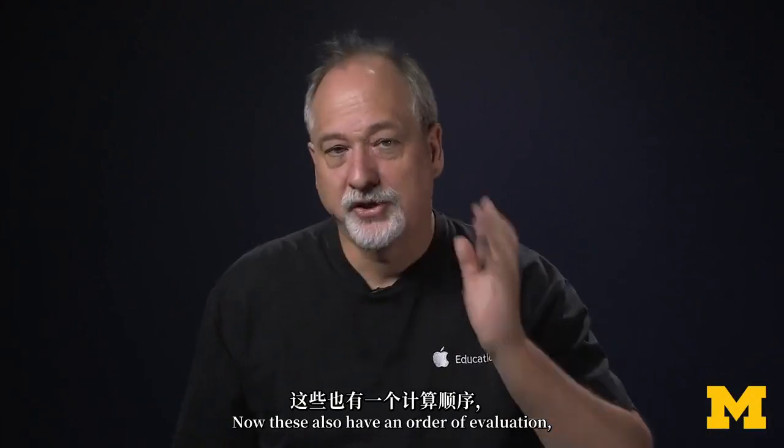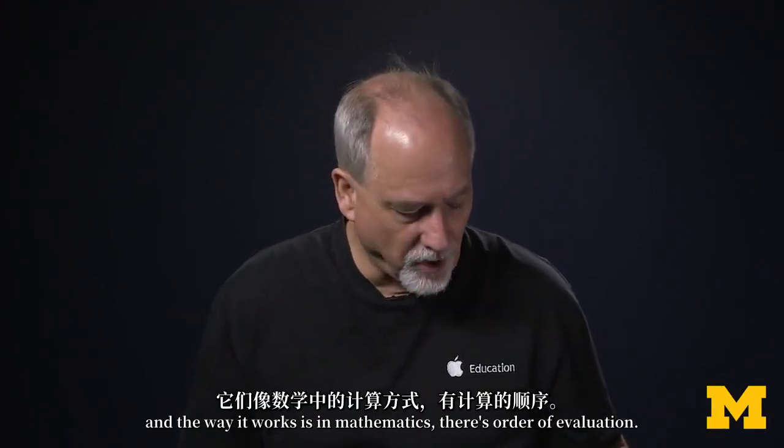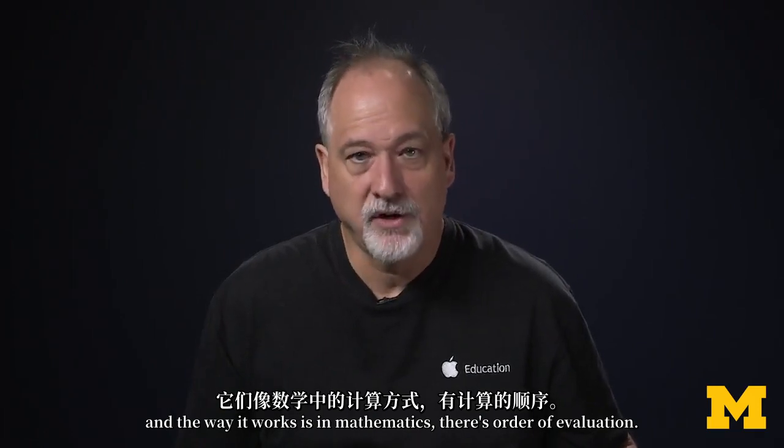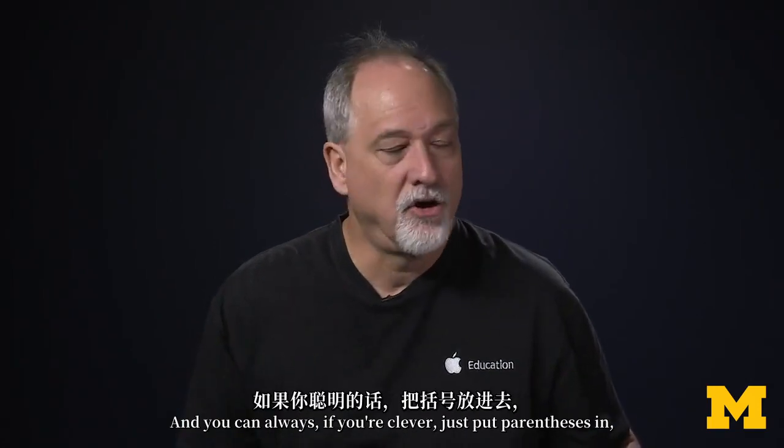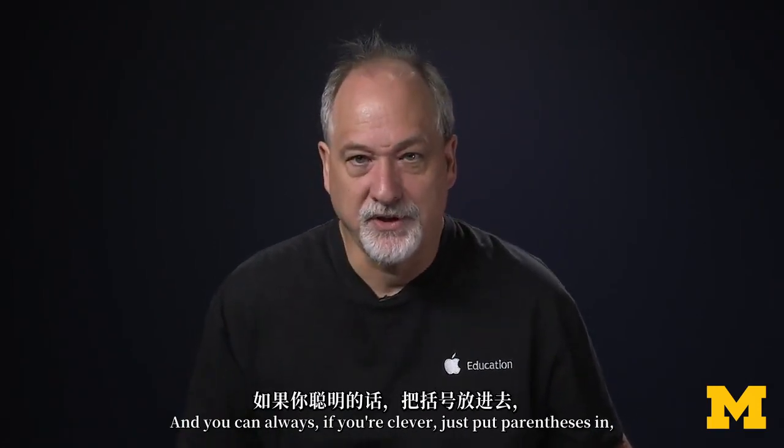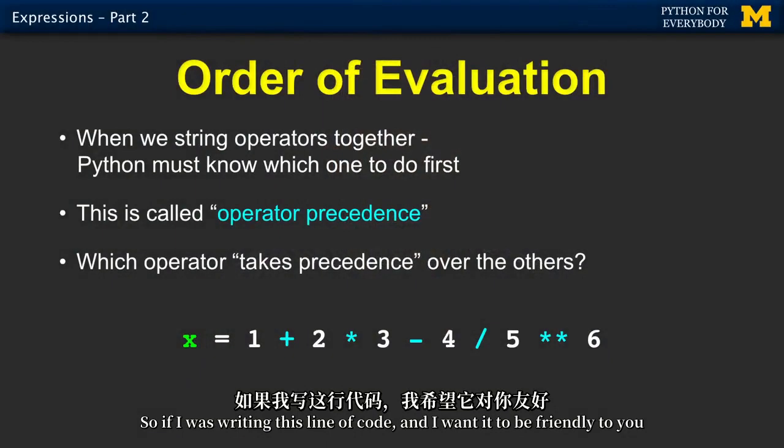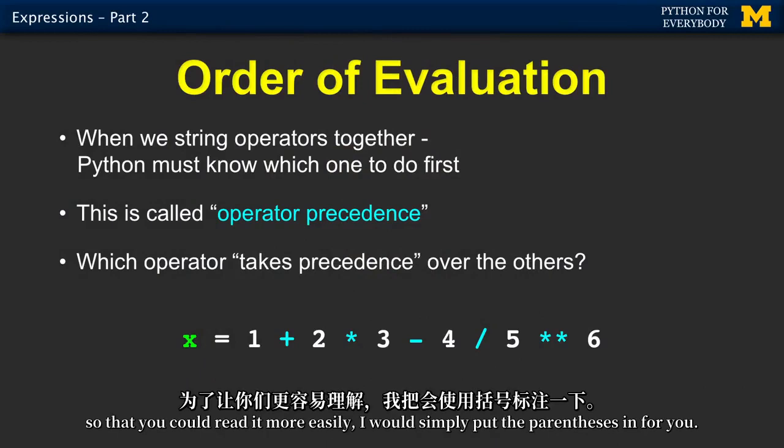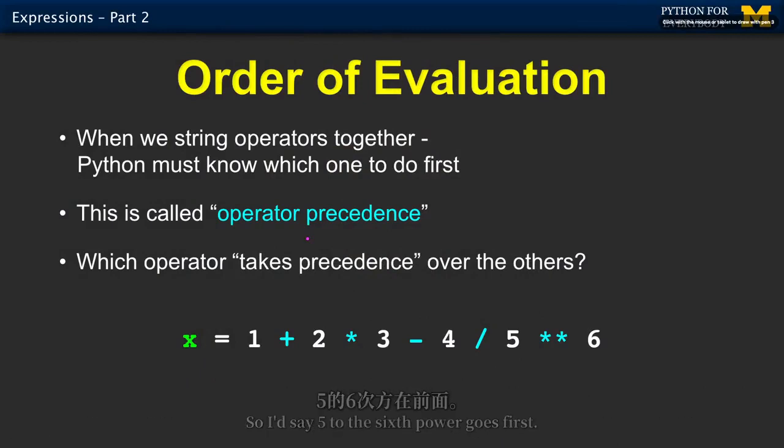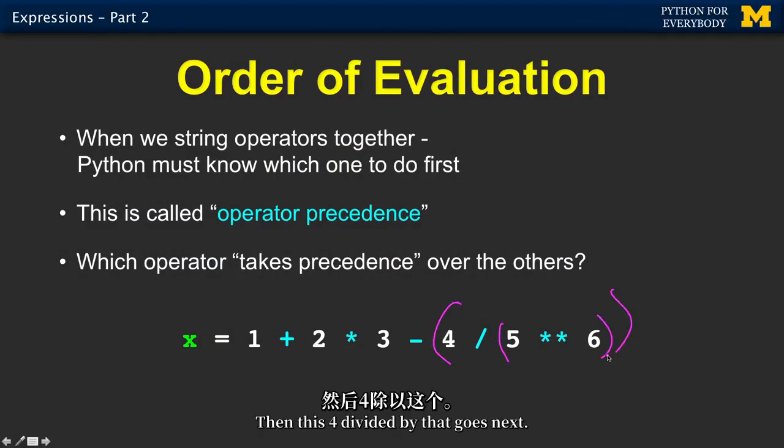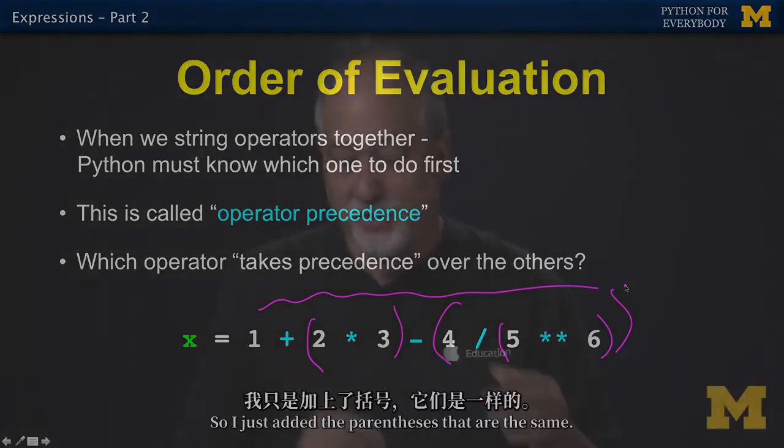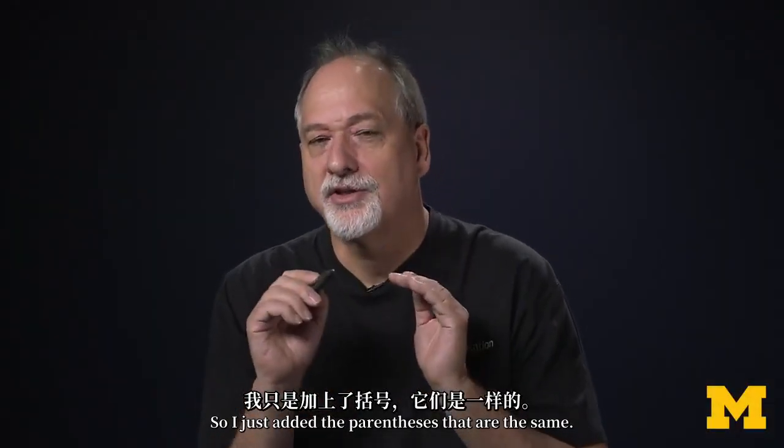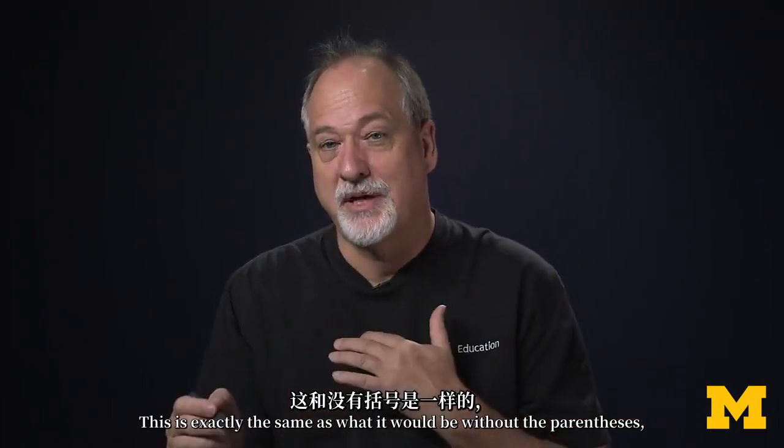Now these also have an order of evaluation, and the way it works is in mathematics there's order of evaluation. There are some operators that are more powerful than other operators. And you can always, if you're clever, just put parentheses in, and most programmers always put parentheses in. So if I was writing this line of code and I wanted to be friendly to you so that you could read it more easily, I would simply put the parentheses in for you. So I'd say 5 to the 6th power goes first, then this 4 divided by that goes next, then this 2 times 3 goes next, and then we evaluate the rest of these things left to right.